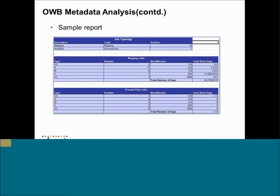Here is a sample report snapshot. It has got a mapping section and a process flow section. It tells you how many of your mappings are simple, complex, very complex, etc. — same with the process flow. Using this report, you can come up with an estimate for your project, like how many man-days you need. In this sample you can see 35 mappings, 3 very complex mappings, and 17 simple mappings. In the full report, you can see each mapping's level detail — what transformations are being used — and for process flows, what tasks are being used. You can have it in front of you before you decide how many man-days you need, what needs to be automated, and what needs to be handled manually.